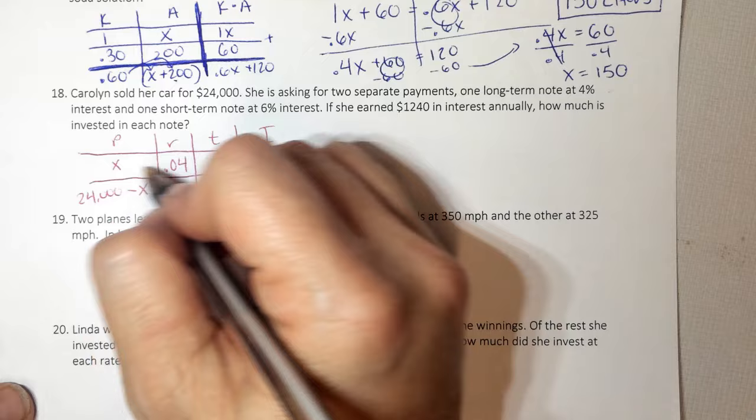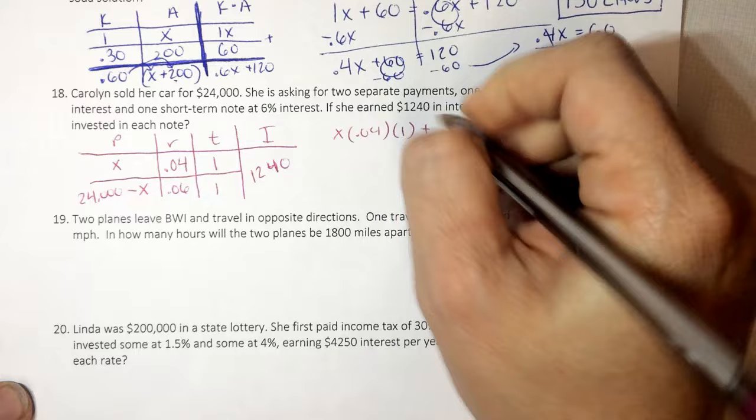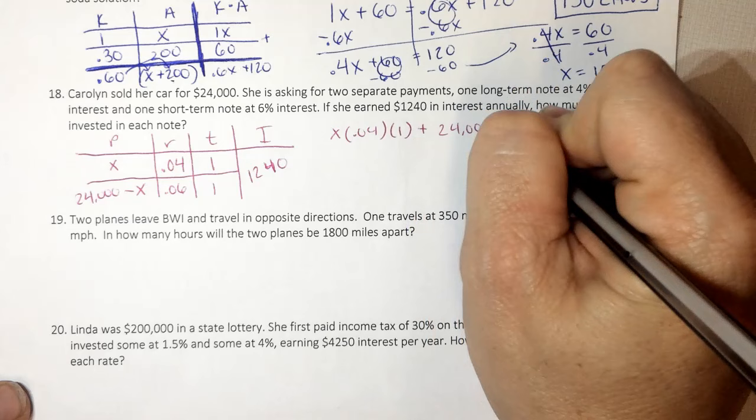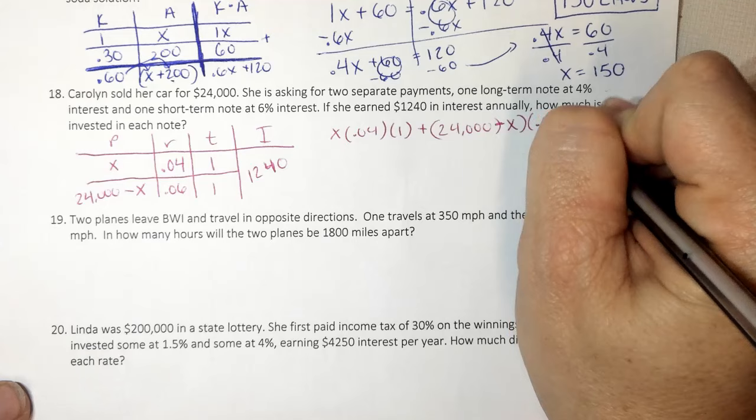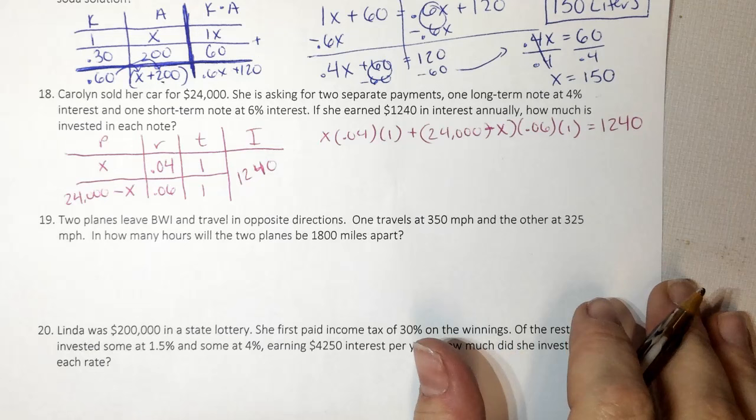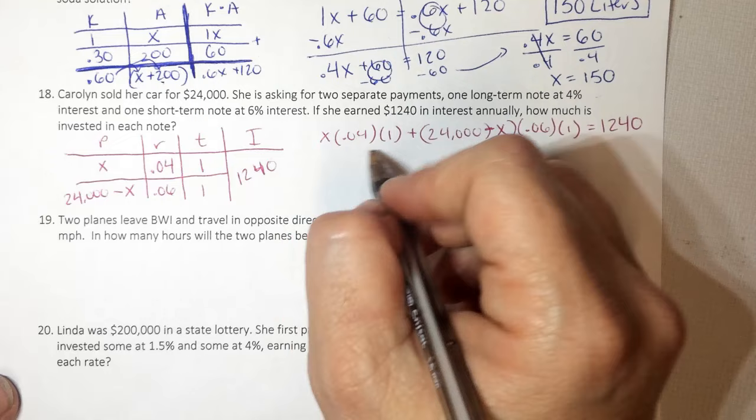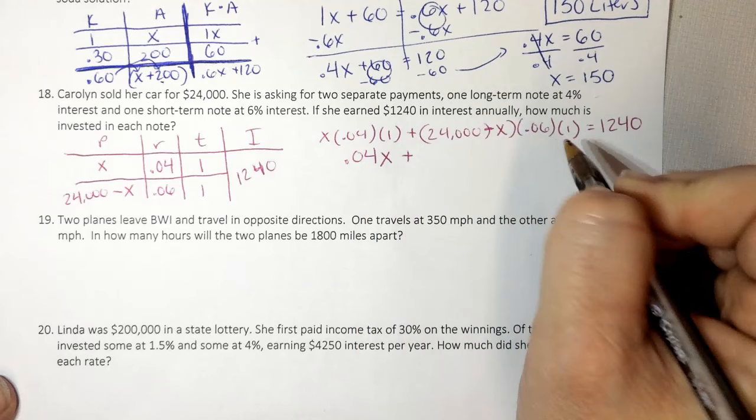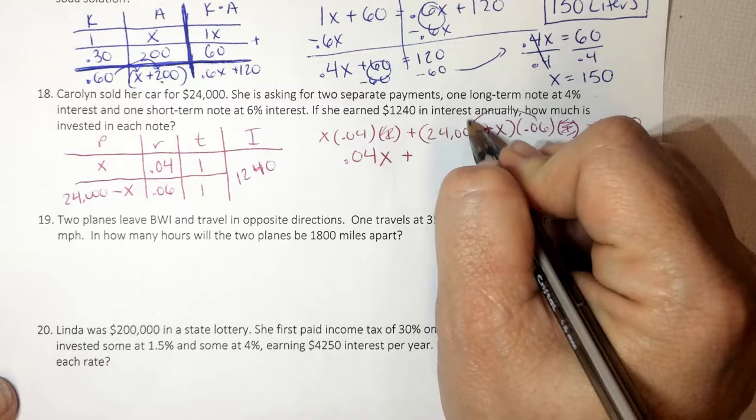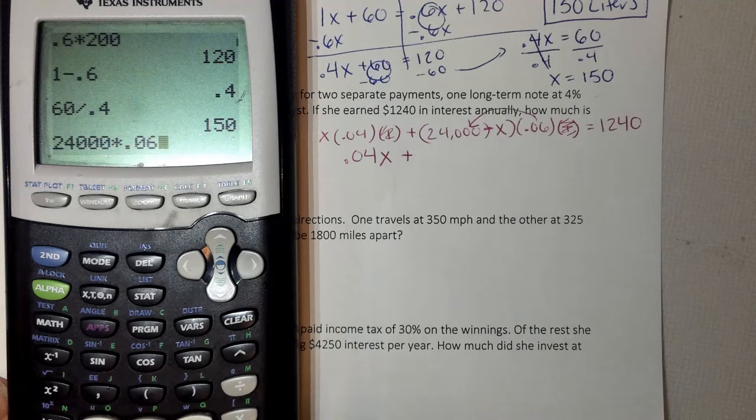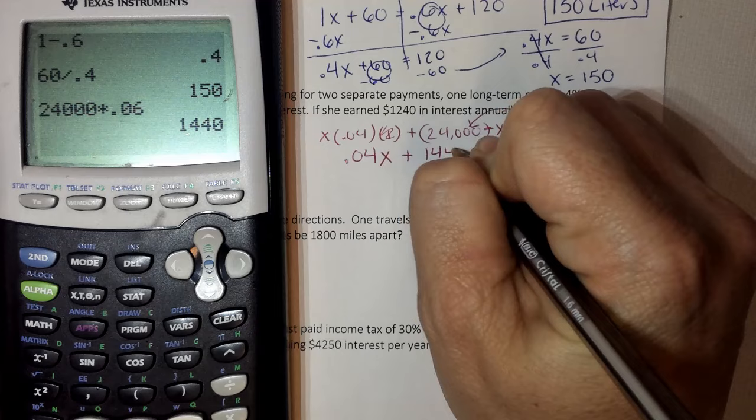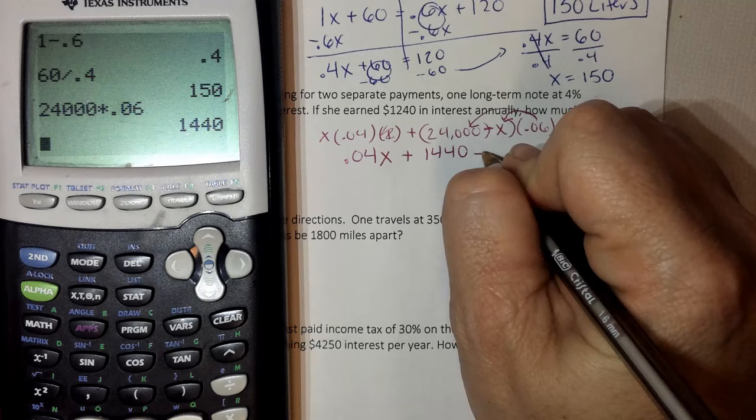The way we solve this is top row plus bottom row equals big box. So now I'm going to multiply. Well, 0.04 times 1 is 0.04, so this gives me 0.04X plus 0.06 times 1, we can ignore the 1, and distribute. So 24,000 times 0.06, always double check how many zeros, is 1,440, and negative 0.06X.